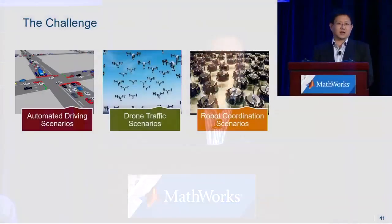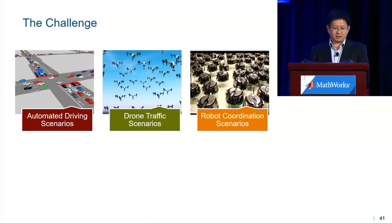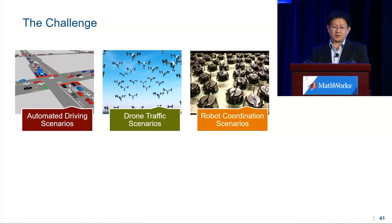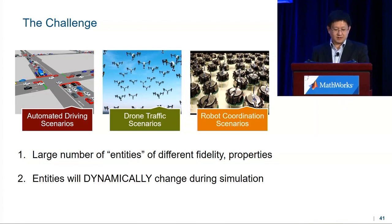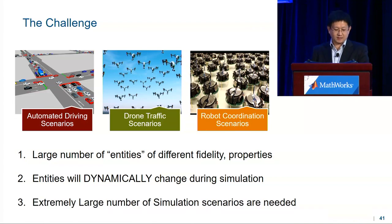Let's see the challenge we're facing. You want to simulate thousands of cars in the city, thousands of drones in the sky trying to make final deliveries, or thousands of robots working in a warehouse to package stuff. What do these have in common? First, you need to simulate a large number of entities of different fidelity and properties. Second, these entities will dynamically change during simulation. And finally, you have to simulate an extremely large number of simulation scenarios.